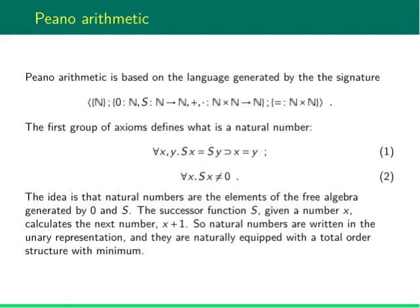The language of Peano Arithmetic has one sort, N, the zero constant, the successor function and two binary operations, addition and multiplication. The only relation is equality.